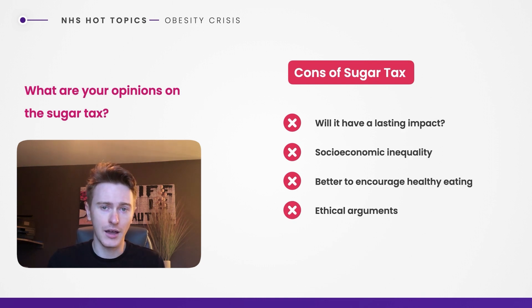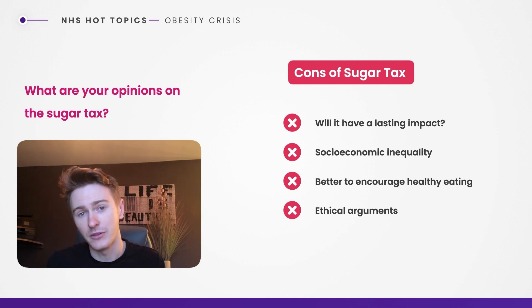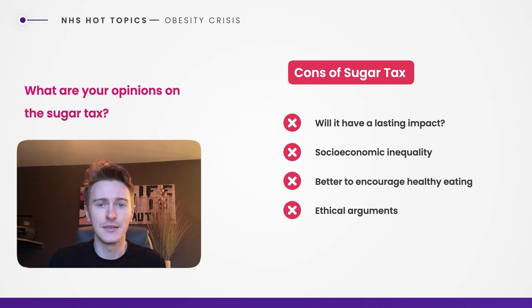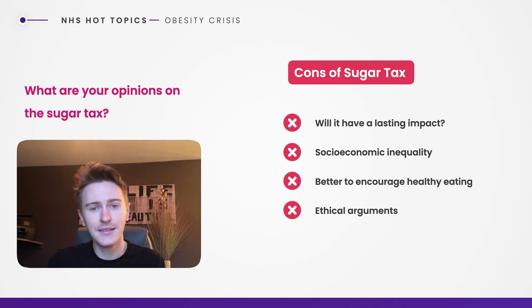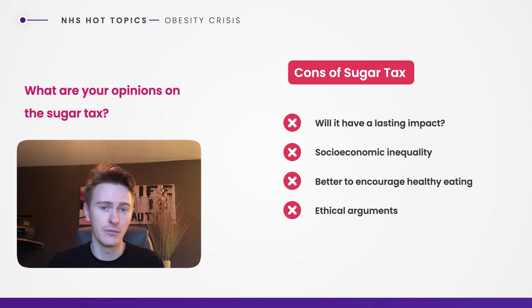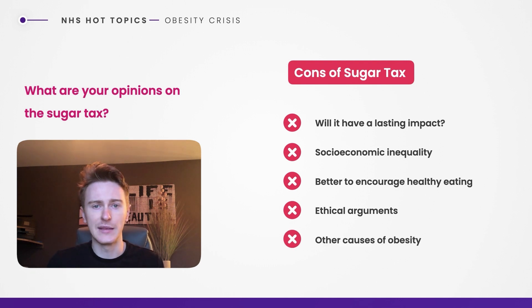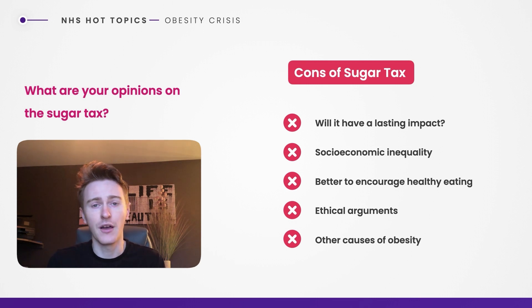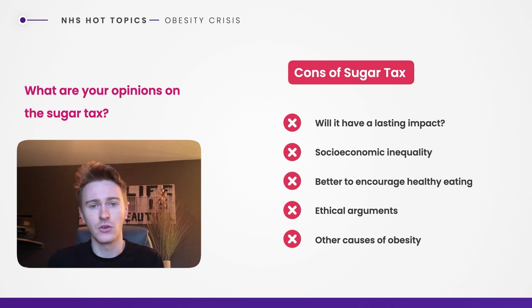Fourth, there are ethical arguments: governments should not be paternalistic. Even though you could argue governments have a responsibility to help citizens' health, arguably they also have a responsibility to let people live their lives — by dictating what people should drink and charging them certain amounts, you could argue that's beyond the scope of government. There are also other causes of obesity: fatty foods and other food types, as well as not doing enough exercise, can be massive causes of obesity in a country where jobs are largely sedentary.